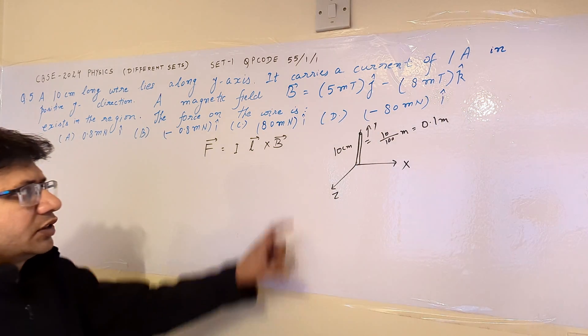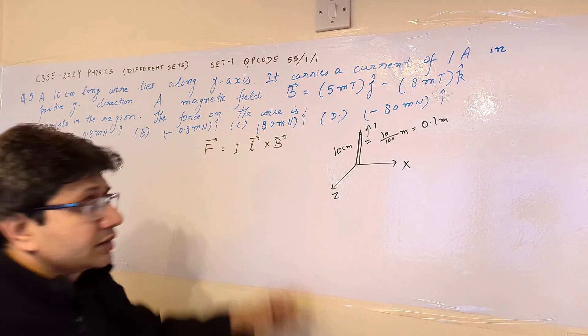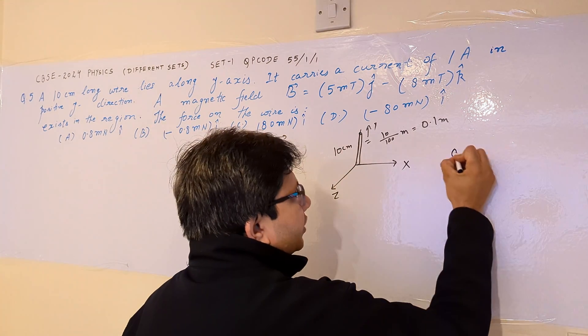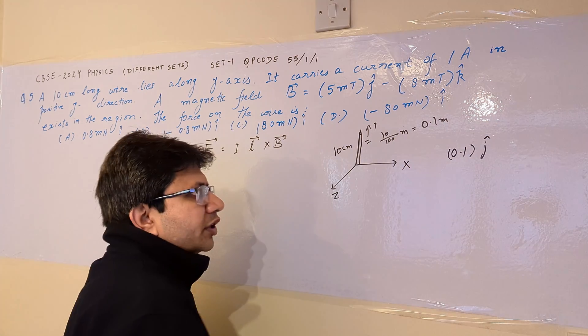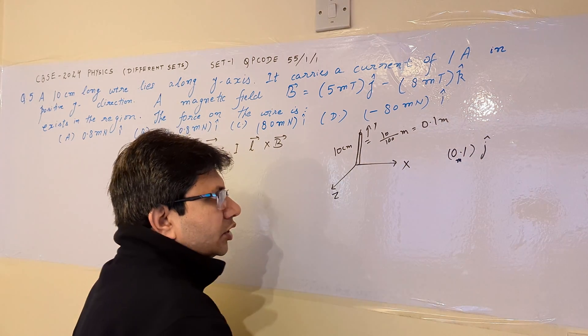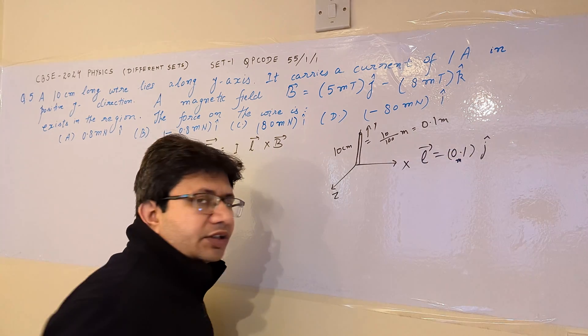So this is the length of the wire and it is along the y-axis. It means that we have to write it in this manner: 0.1 meters J cap. So this is our length vector.